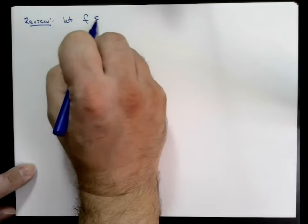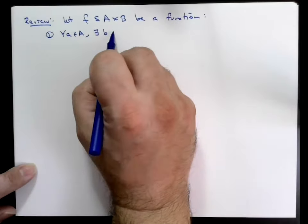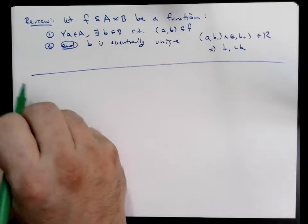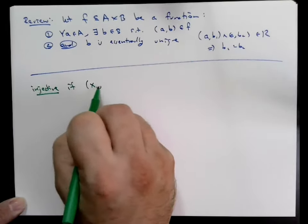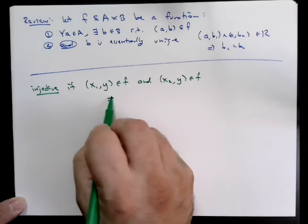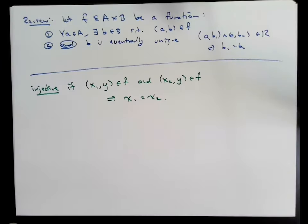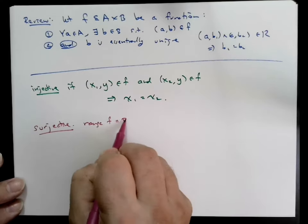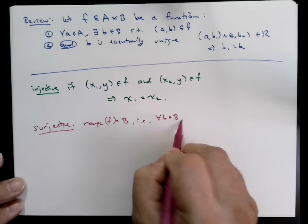Now let's remind ourselves of some terminology about functions. Recall that we said a function was injective if whenever (x1,y) and (x2,y) appear in the function, then x1 must be equal to x2. We said that a function was surjective if its range equaled B.